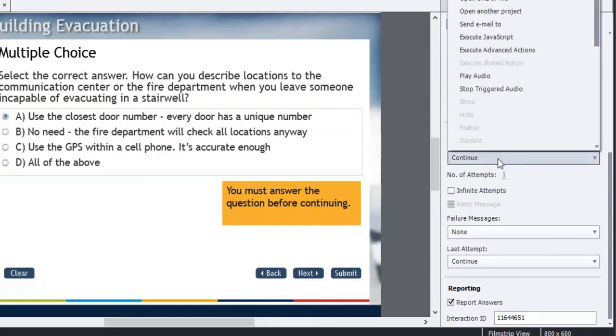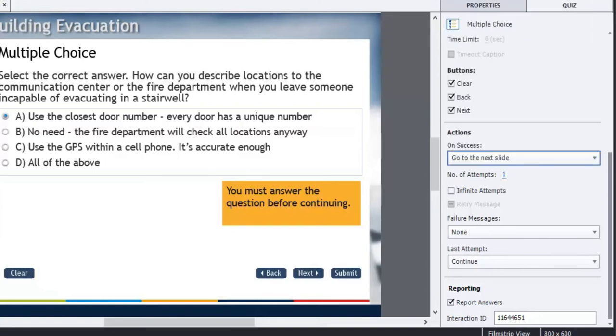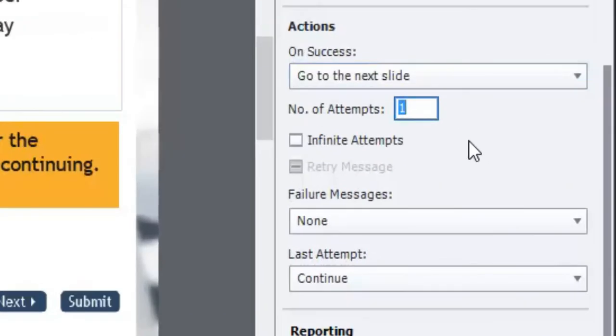My success action will be go to the next slide, and I want the user to try this again. It's just a knowledge check. I'd like them to have feedback and try again if they don't succeed the first time. So I'm going to say a number of attempts: three. Obviously four would just be able to guess until they get the correct answer, so we'll give them three tries.